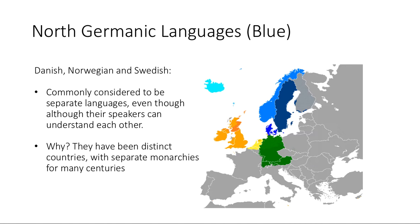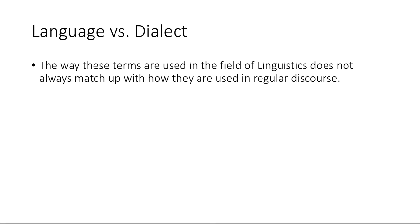We also have the opposite situation with the North Germanic languages — Danish, Norwegian, and Swedish — which are usually called separate languages. Nobody says Norwegian and Swedish are the same language. But speakers of these two languages can actually understand each other; they're pretty mutually intelligible. Why are they considered different languages? It's probably mostly political — they've been distinct countries for many centuries. So even though by our definition these are dialects, most people call them languages. The way these terms are used in linguistics doesn't always match regular discourse.